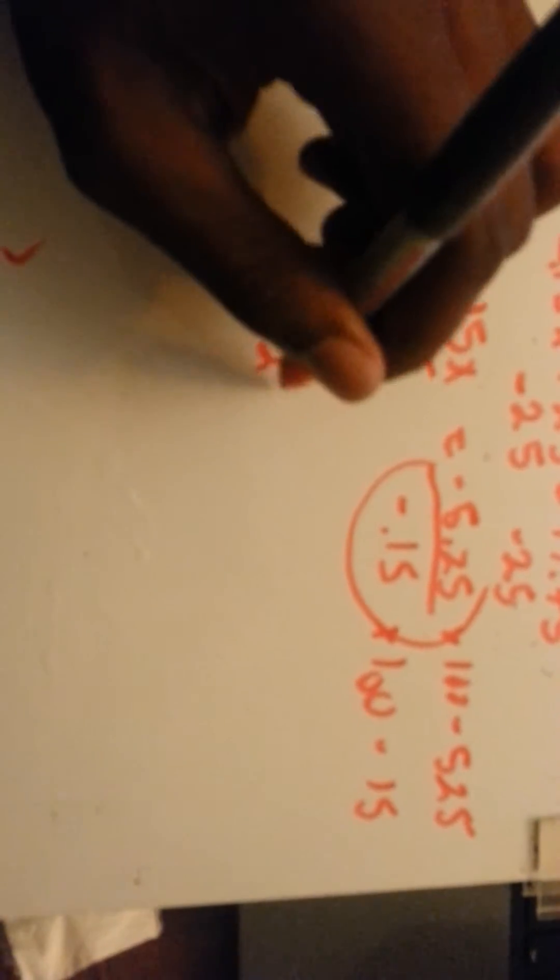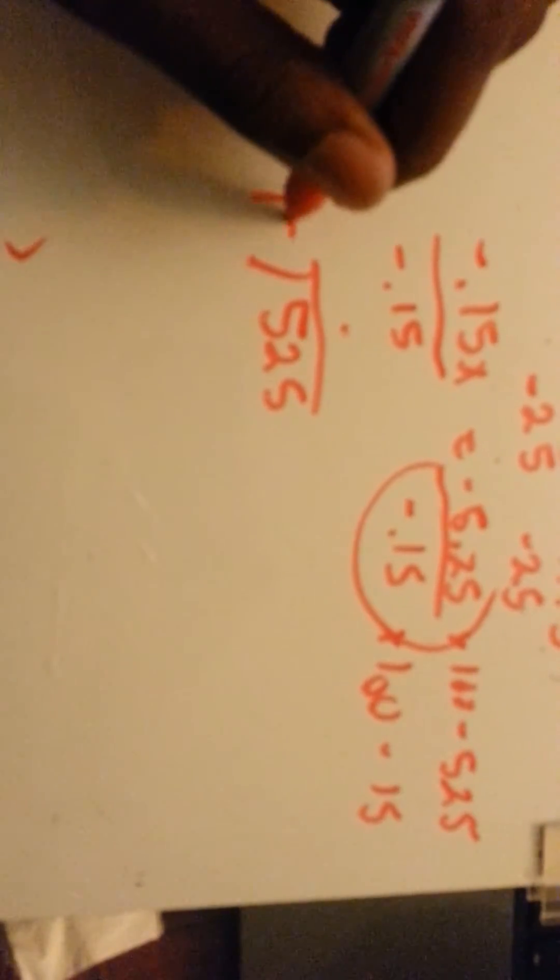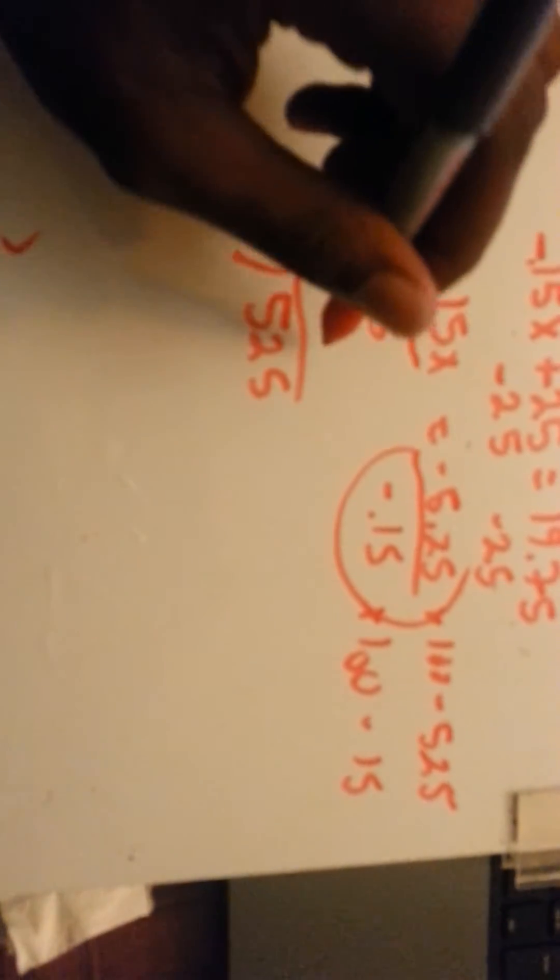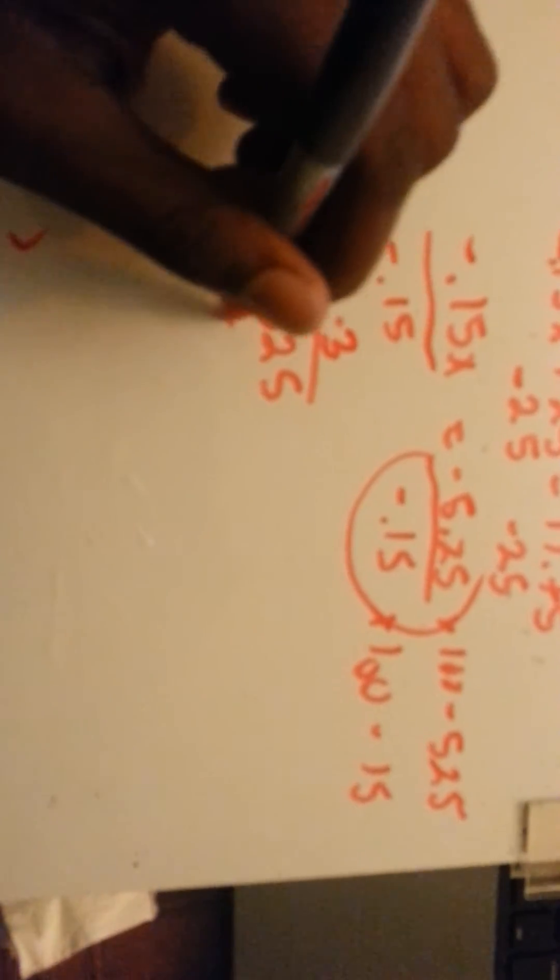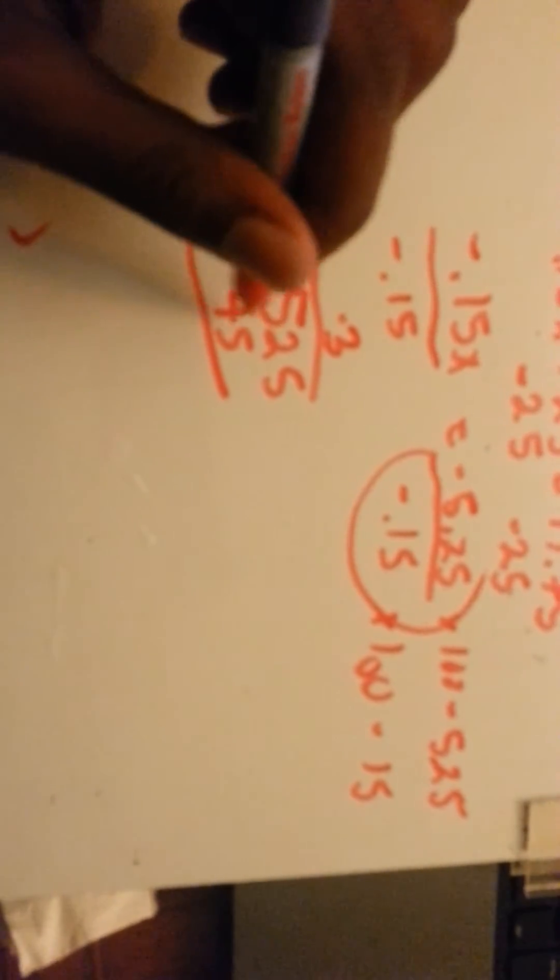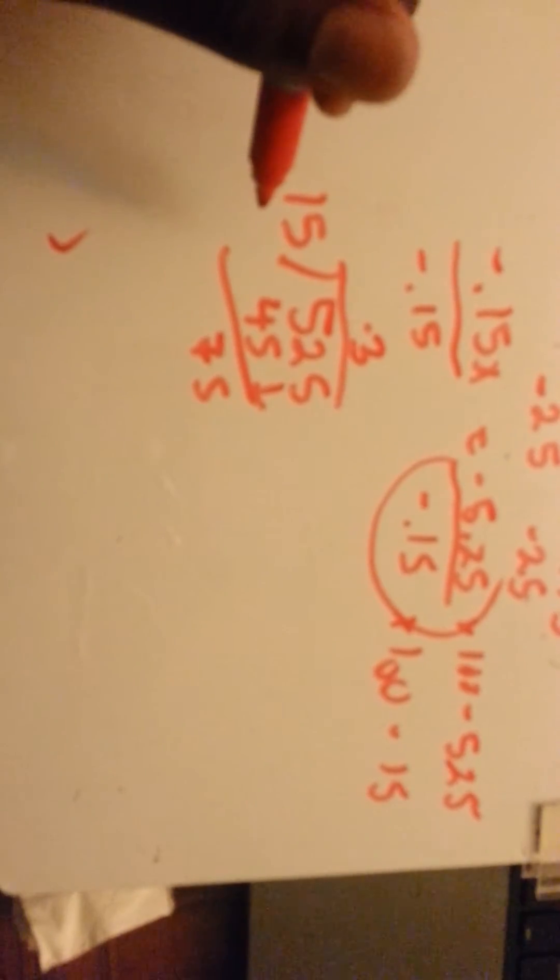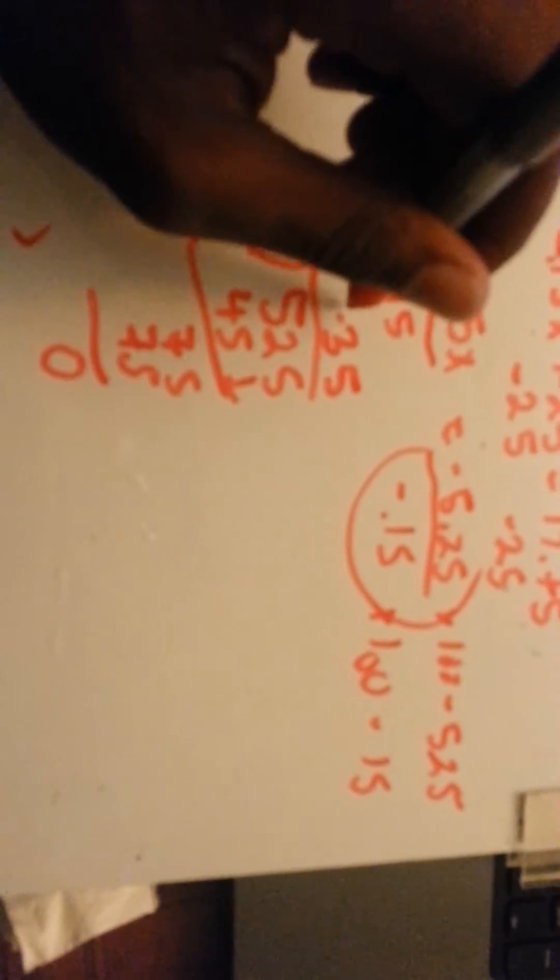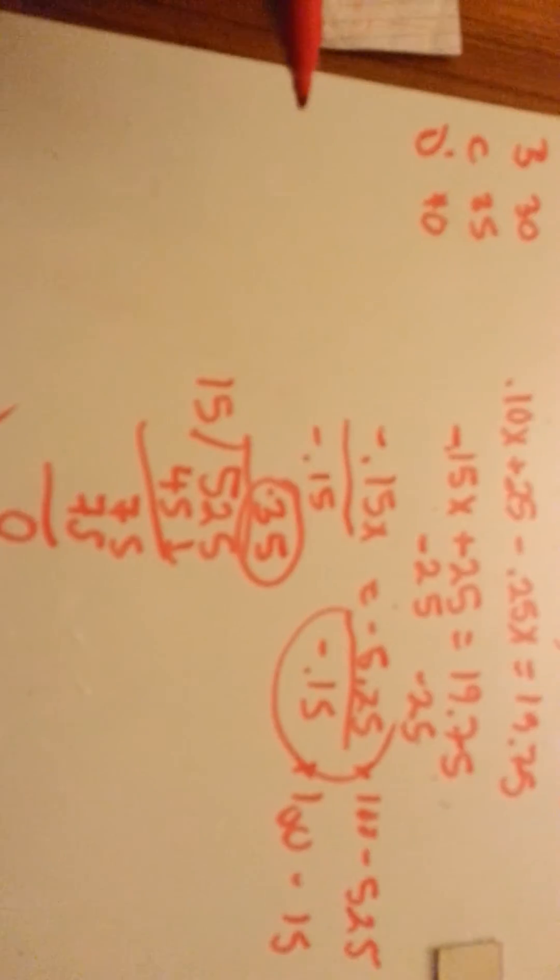So we have 525 divided by 15. 15 goes into 5 zero times, 15 goes into 52 three times. 15 times 3 is 45. 52 minus 45 is 7. Bring down the 5. 15 goes into 75 five times. 15 times 5 is 75. Zero. The answer is 35, 35 dimes.